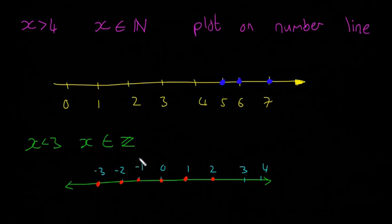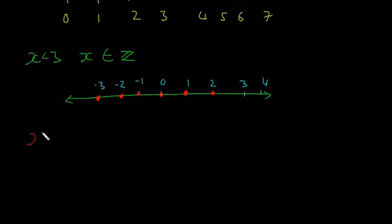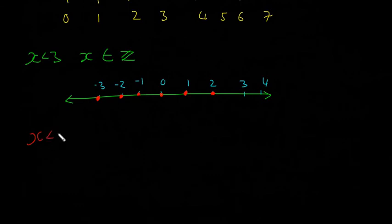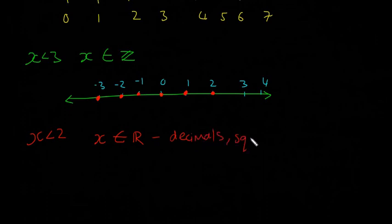Next example we're going to look at is x is less than 2, this time x is in the set of real numbers. This means it can be any real number, so it can be decimals and square roots as well, and I'll stick in fractions as well. It doesn't have to just be the whole numbers, it can be anything in between.